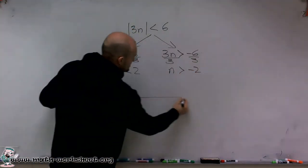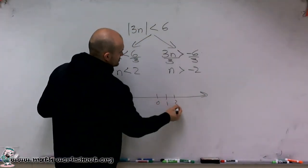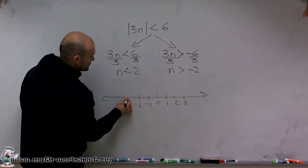So now, to graph this, I'm going to create a number line. And let's do 0, 1, 2, 3, negative 1, negative 2, negative 3.